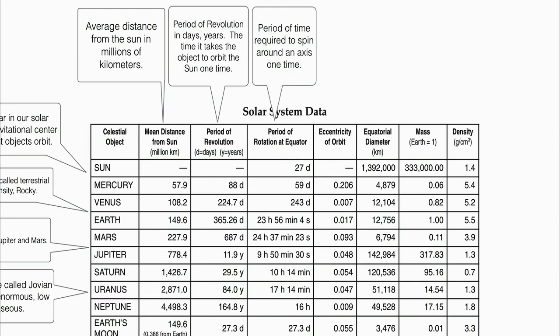The next column is the period of rotation at the equator, which is basically the time it takes to spin one time. Earth's is 23 hours, 56 minutes, 4 seconds — that's a sidereal day. Mars also has about a 24-hour day, which is one of the reasons why we're exploring that planet and hope to one day send a colony there. Venus takes 243 days to spin on its axis — a day is actually longer on Venus than a year. Rotational spin doesn't depend on position in the solar system or planet size.